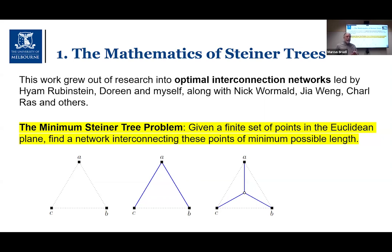That extra point is known as a Steiner point. The addition of Steiner points and finding their optimal locations allows us to find interconnection networks considerably better than spanning trees. This example also showcases basic properties of these minimum networks: the extra point has degree three — three incident edges — and the angles between incident edges are 120 degrees.